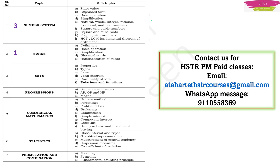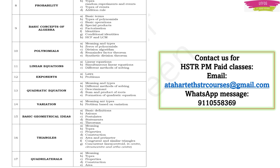For Number System, three questions were seen in the 2015 paper. For Surds, one question; Progressions, two questions; Commercial Mathematics, two questions; Statistics, two questions; Permutation and Combination, one question; Probability, one question. For Basic Concepts of Algebra, four questions were there. Note that Basic Concepts of Algebra and Polynomials often come together, so it is tough to differentiate exactly which part they are from.